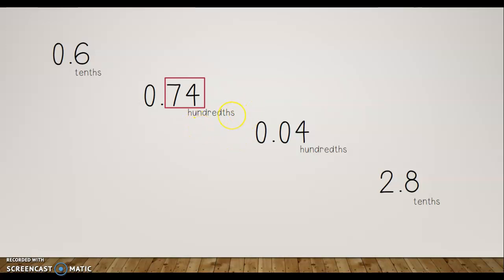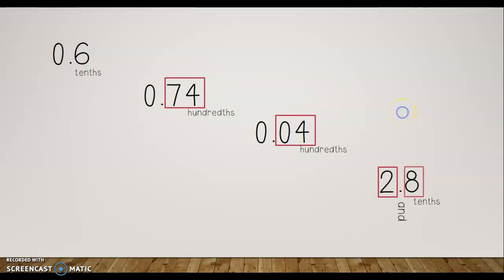You say what's after the decimal together, so you say '74' and then add the word 'hundredths' because that is the last place value. For four hundredths, you have a zero in the tenths place as a placeholder — you can't just write a four in the hundredths place. You also learned that when you have a mixed number with some wholes, you say the whole first, then 'and' for the decimal point, then what's after — like 'eight tenths.'